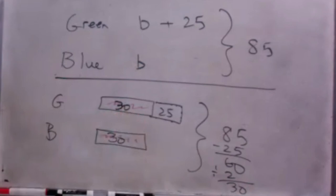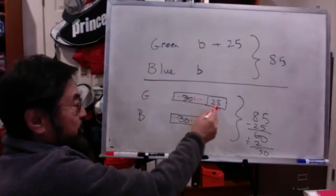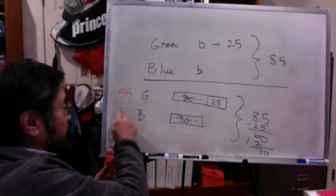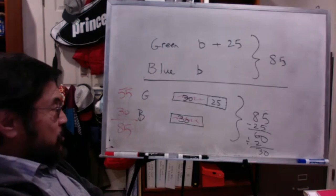Everybody with me? So then how many green balloons were there? 30 plus 25 is 55. How many blue balloons? 30. And it totals 85, right? So this is the way I would like you to set this up.